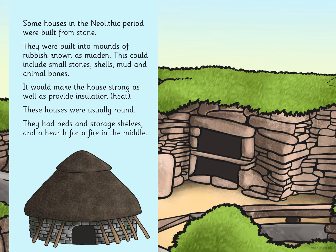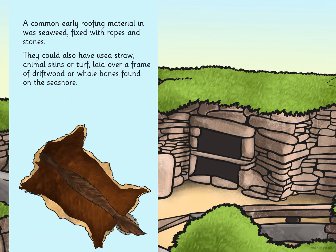Some houses in the Neolithic period were built from stone. They were built into mounds of rubbish known as midden, which could include small stones, shells, mud, and animal bones — this would make the house strong as well as provide insulation, which means heat. These houses were usually round and had beds, storage shelves, and a hearth for a fire in the middle. A common early roofing material was seaweed fixed with ropes and stones; they could also have used straw, animal skins, or turf laid over a frame of driftwood or whale bones found on the seashore.